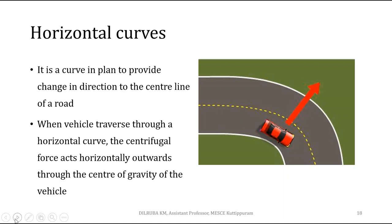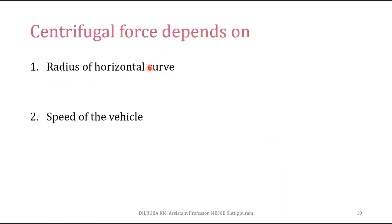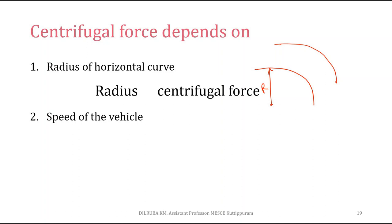As you can see in this figure, when a vehicle negotiates a horizontal curve, there is a force acting outward through the center of gravity of the vehicle, and this force is known as centrifugal force. Centrifugal force depends on two factors: the radius of the horizontal curve and the speed of the vehicle. If the radius is higher, the centrifugal force will be lesser.